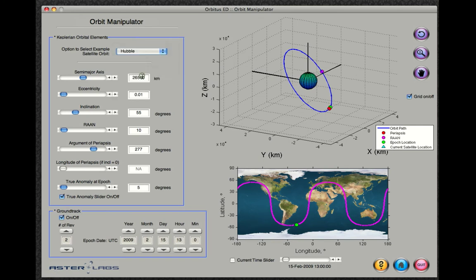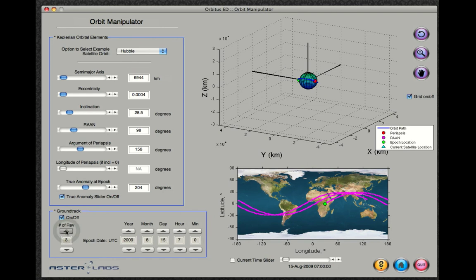Select another one such as the Hubble Space Telescope. You can increase the number of revolutions plotted in the ground track.